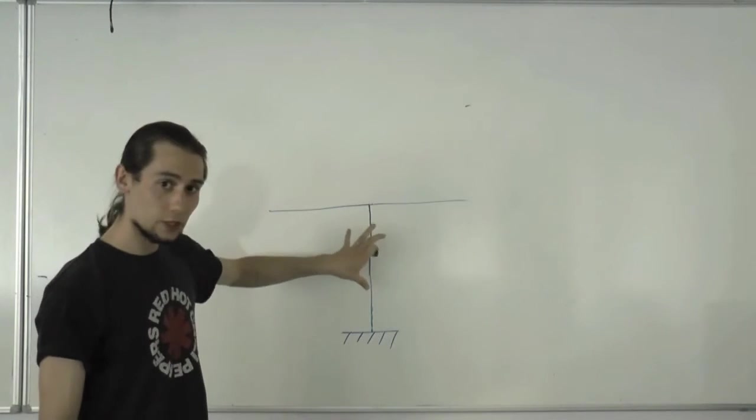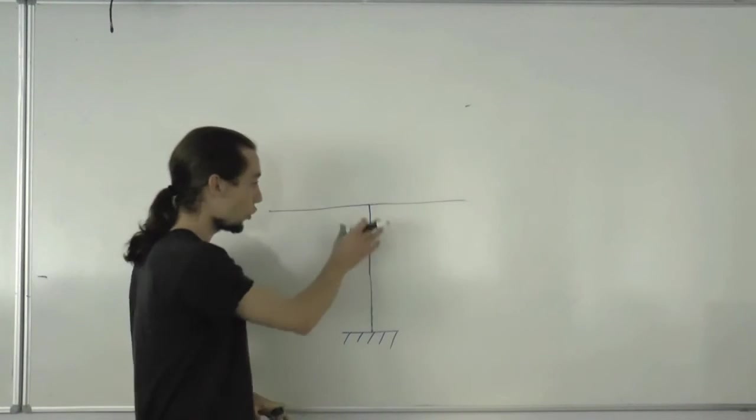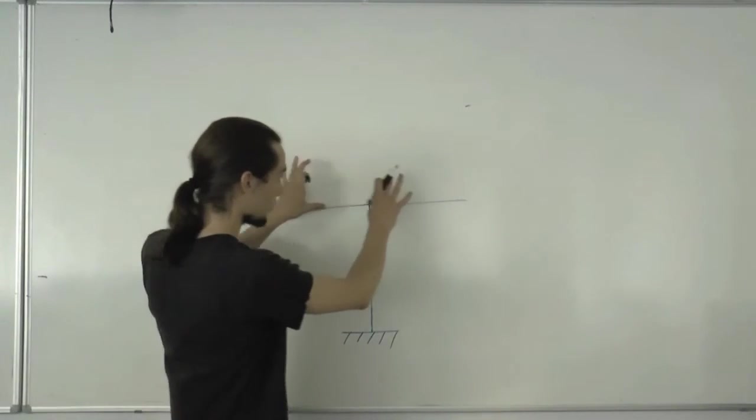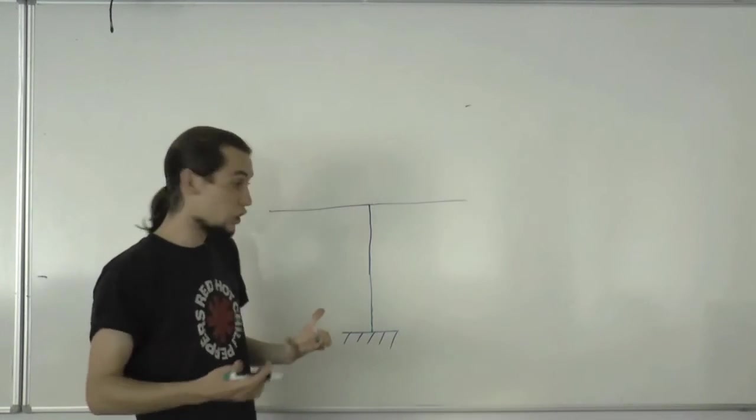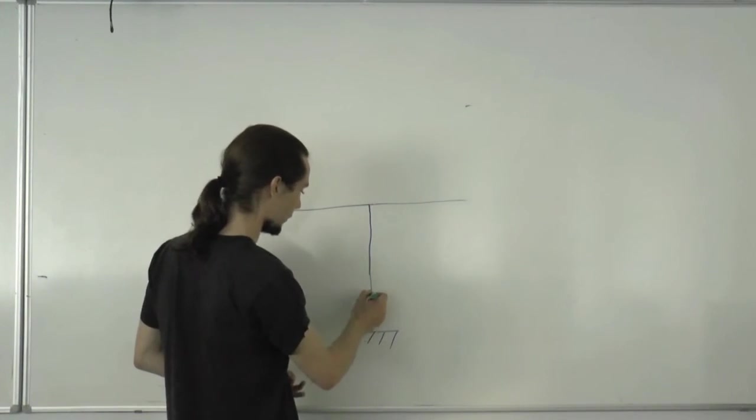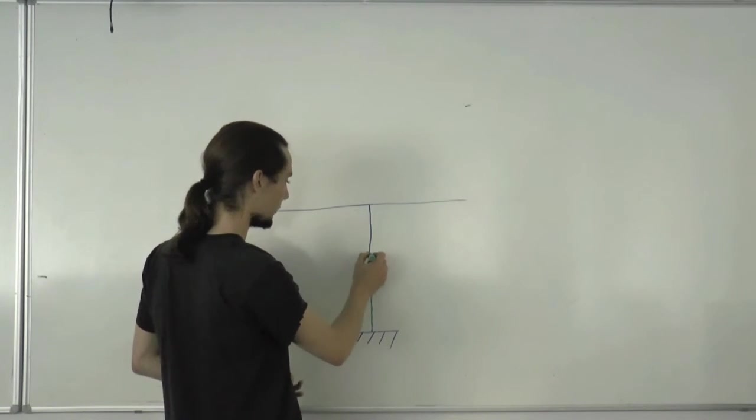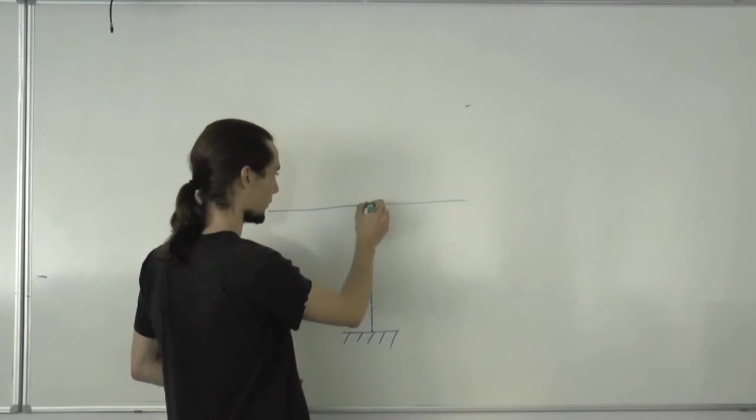Something we failed to mention when we looked at the bending moments is there's no bending in this column because we have a completely symmetrical case. Because there's no bending in the column, we don't expect there to be any curvature of the form. So it's going to be straight all the way up to the top, which is nice and easy for us.